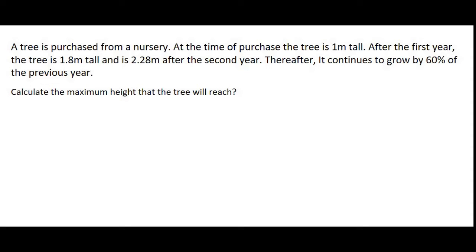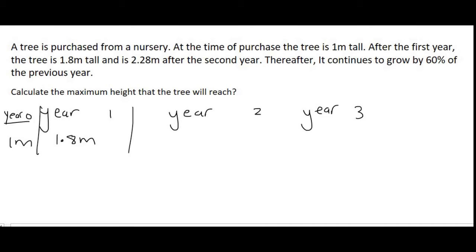Calculate the maximum height that the tree will ever reach. So what I want you to try to do for now, just so we can start seeing how the numbers come together, is let's see what the tree's height will be after 5 years. After the first year, we know that the tree is 1.8 meters tall. Let's also add in year 0, just so we can remember what the tree's height was in the beginning. That was 1 meter. After the second year, it is 2.28 meters tall. And then thereafter, it continues to grow by 60% of the previous year. When going from year 1 to year 2, that is a difference of 0.48 meters.